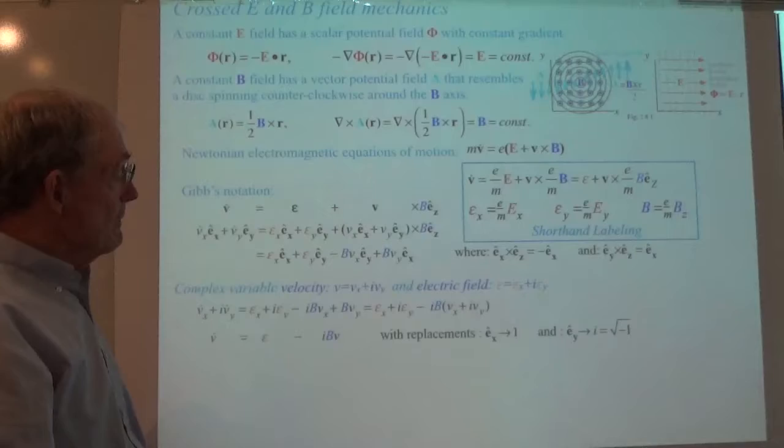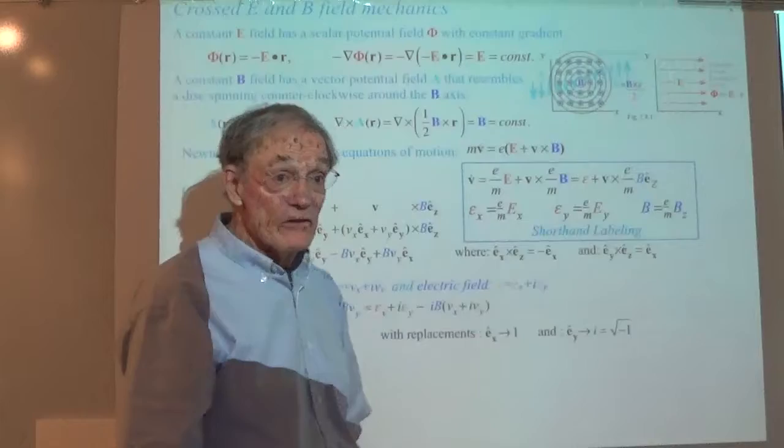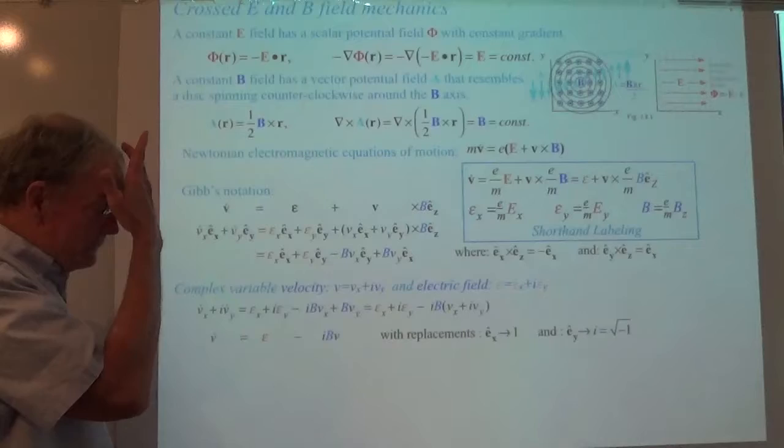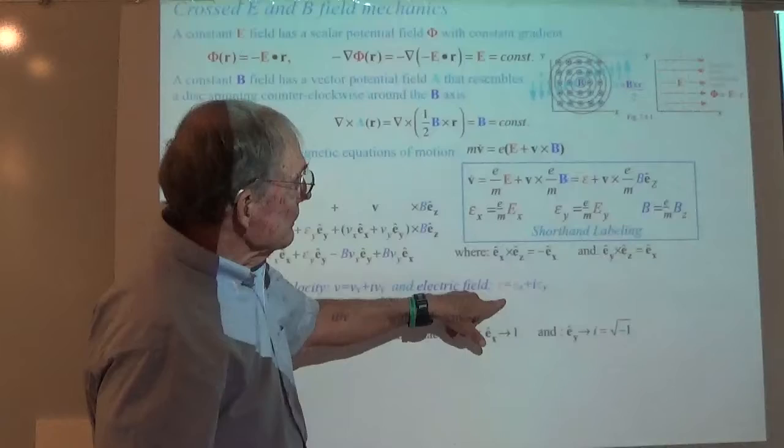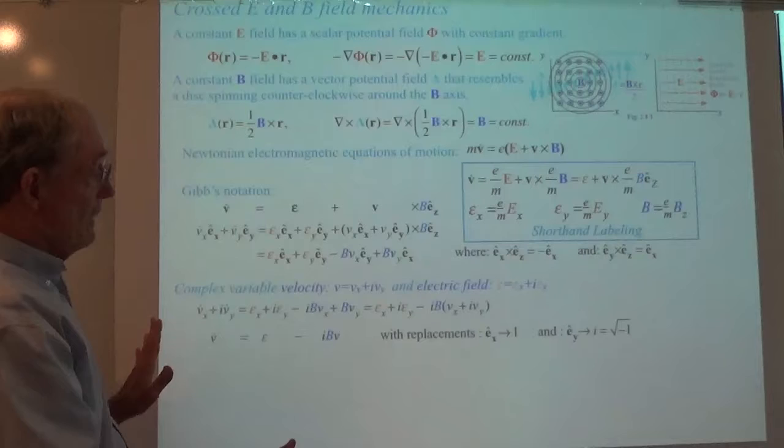I'm going to write velocity as v_x + i·v_y. The replacements here are that e_x will just be a 1, and e_y will be an i. My complex electric field epsilon is going to be epsilon_x + i·epsilon_y to replace just the vector — so I won't be writing vectors, just numbers, taking care of two dimensions all at once.